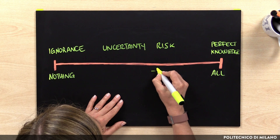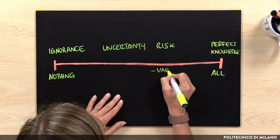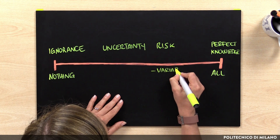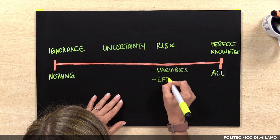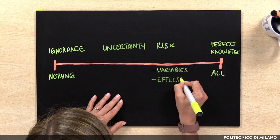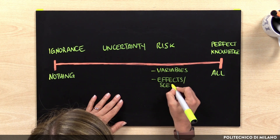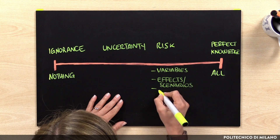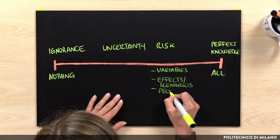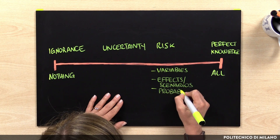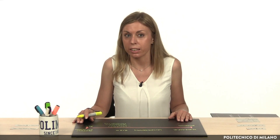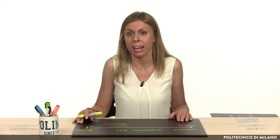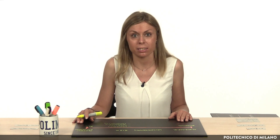In the case of risk, the decision maker knows which are the main variables of the problem to consider, which are the possible scenarios that might happen, and also which are the probabilities of occurrence of each scenario — based on the knowledge of experts or on the basis of the possible occurrence of the same scenario. This is the typical case where the decision maker has data about past events such as market analysis, historical data, etc.